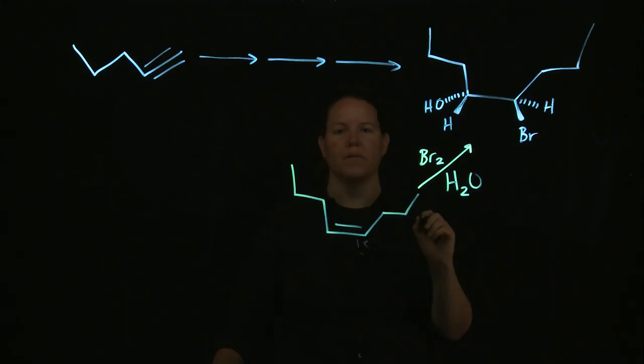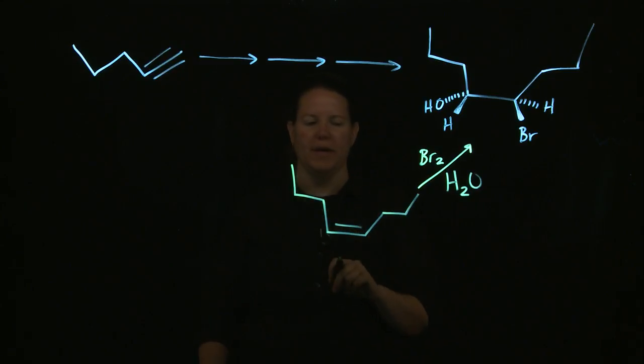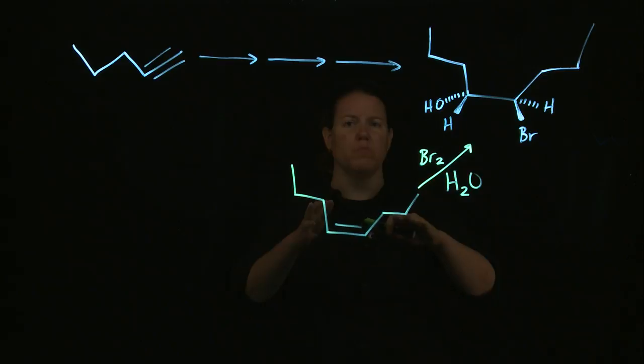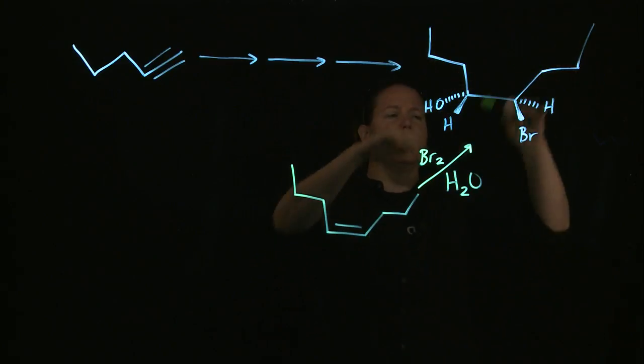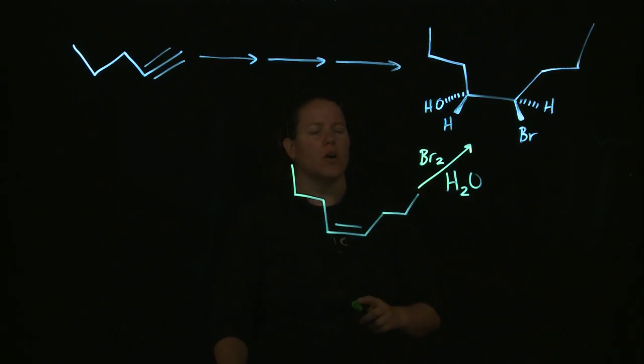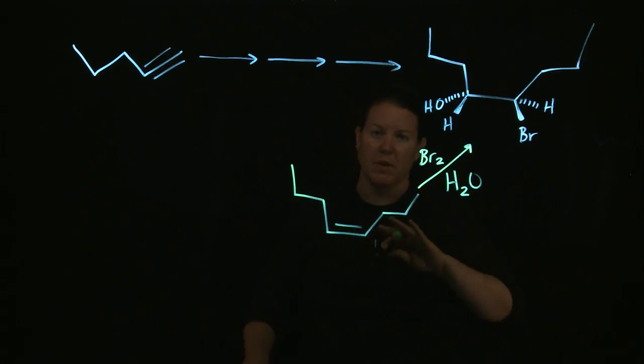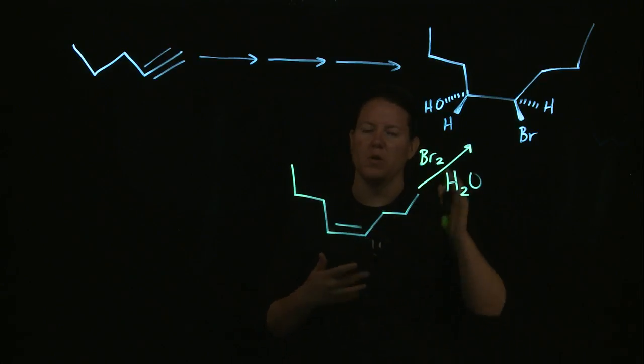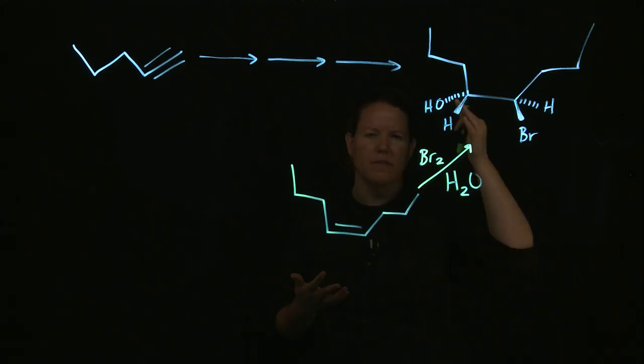And you basically do this under certain conditions. We could talk about that for a long period of time, but we won't. In terms of what we need to get to is we need to know that this is basically the only way I know how to make that kind of configuration, an anti addition of the halide and the alcohol, which means that I had to have a double bond between those to begin with.